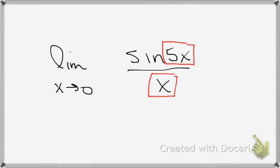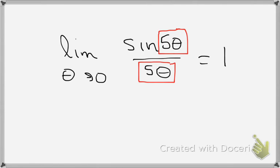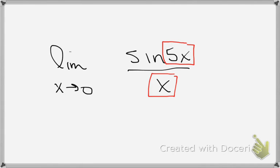But you might notice right away that if there was a 5 in that denominator, then I would have a perfect match. As a matter of fact, it would look just like this problem with the thetas and x's interchanged. So what can I do legally?